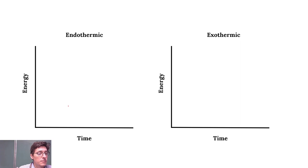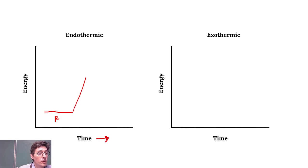We've got energy and time on a graph. In endothermic reactions, we have our reactants at a lower energy state than our products. Over time, as that reaction progresses, the energy is absorbed from somewhere — it could be your hand, it could be from the room, just the temperature in the room — and the products have a higher energy level.